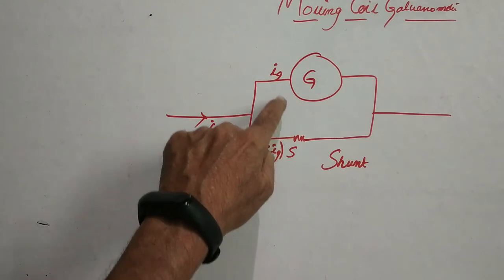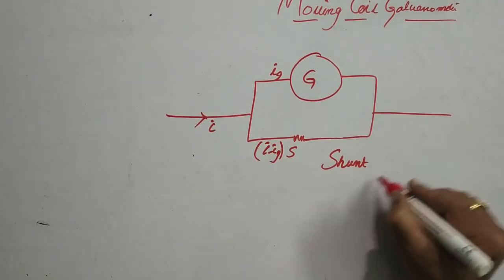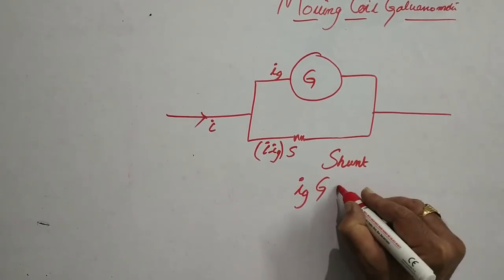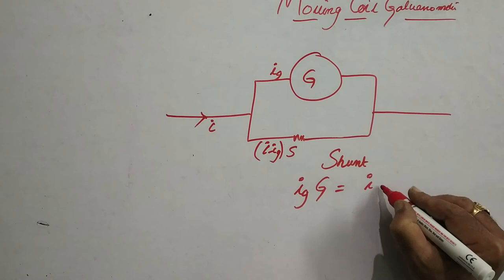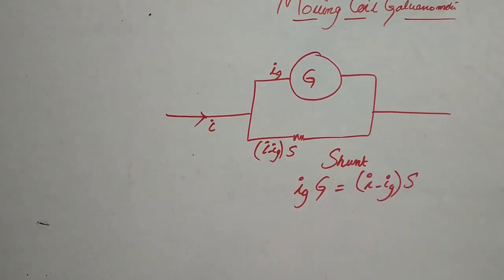As the two are connected in parallel, the potential difference is same. Therefore, the expression that we can write is IG times G is equal to I minus IG times S.